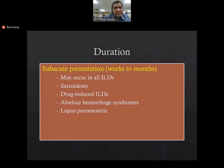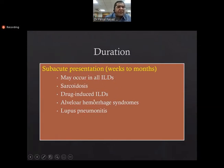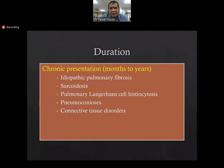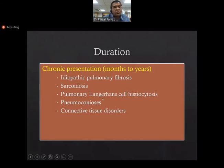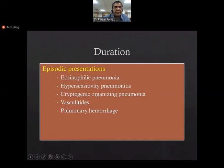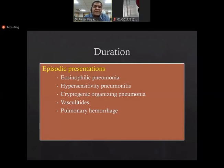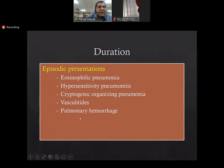Subacute presentation is from weeks to months and may occur in sarcoidosis, drug-induced ILDs, alveolar hemorrhage syndromes, and lupus pneumonitis. Chronic presentation — months to years — is the usual scenario, and the hallmark is IPF (idiopathic pulmonary fibrosis), sarcoidosis, PLCH, pneumoconiosis, and connective tissue disorders. Episodic presentations — where a patient gets better and worse repeatedly — suggest eosinophilic pneumonia, hypersensitivity pneumonitis, cryptogenic organizing pneumonia, vasculitis, or pulmonary hemorrhage.